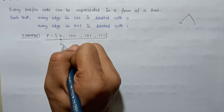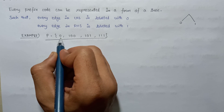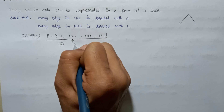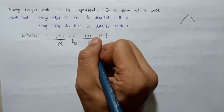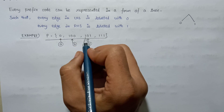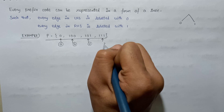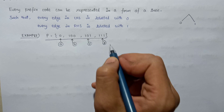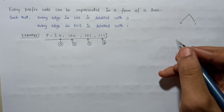Before drawing the binary tree, let's assign some variables. We assign variable A to code word 0, variable B to code word 100, variable C to code word 101, and variable D to code word 110.